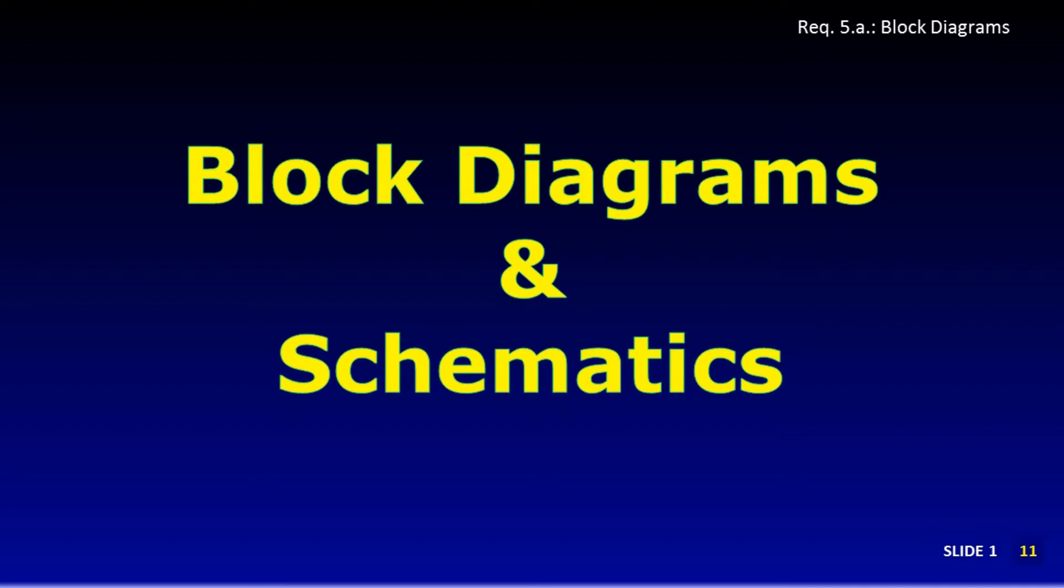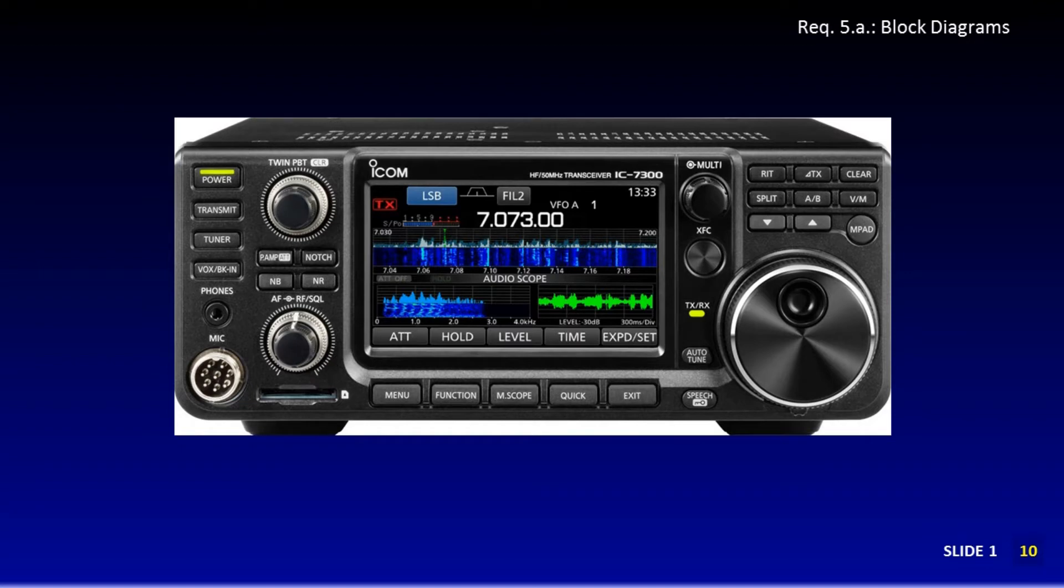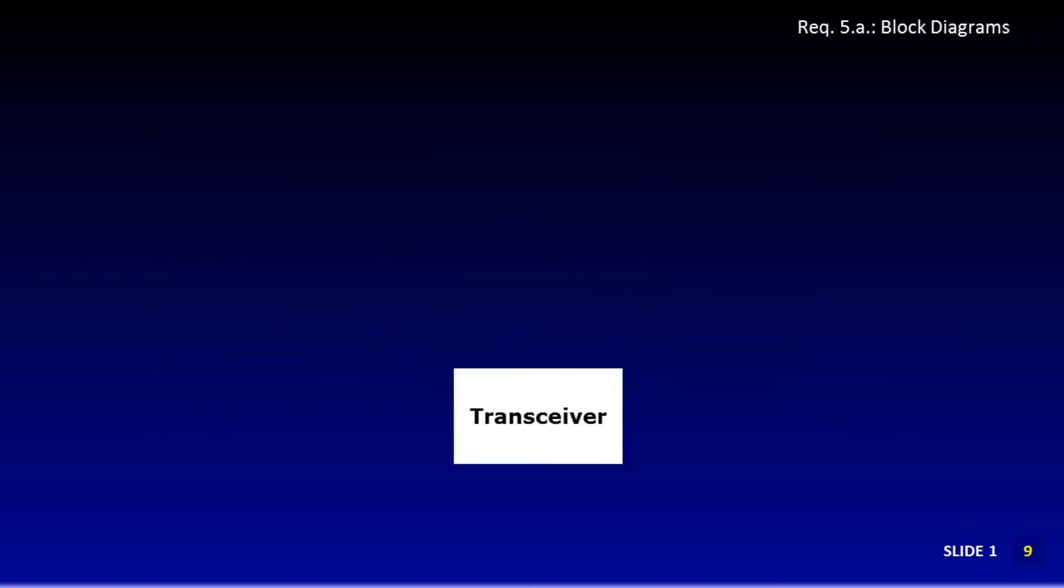We'll start by building a ham radio station using a block diagram. Usually, when a radio operator starts to think about a radio station, the transceiver is the first thing to come to mind. You'll see lots of them in a ham radio station. We'll lay down this label, transceiver, as part of a radio station block diagram.